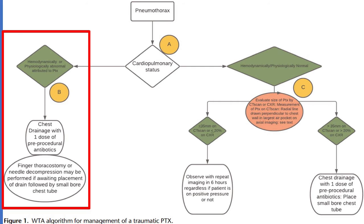Treatment consists of one dose of pre-procedural antibiotics, as it decreases the risk of pneumonia and empyema. Do not let the lack of a pre-procedural antibiotic delay treatment in an unstable patient, but it should be given as soon as possible. They recommend finger thoracostomy in emergency situations as opposed to a needle thoracostomy, as needle thoracostomy has variable results. Place a chest tube as soon as it is available.